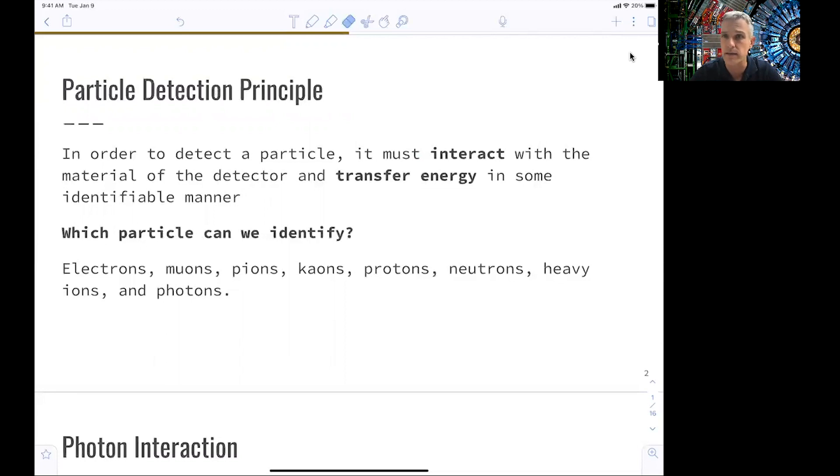So we can ask, what kind of particles can we actually identify? Electrons, muons, pions, kaons, protons, neutrons, heavy ions, and photons. But the key here in this list of particles is that those particles have to be stable. So we cannot directly identify tau as the tau decays before it has a chance to interact with the detector. The same for a top quark, a Higgs boson, and so on.